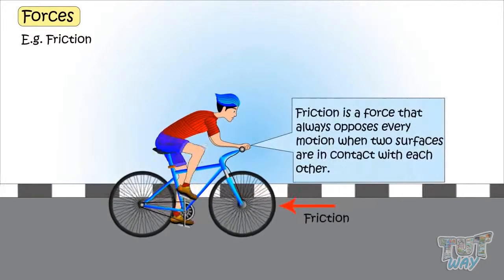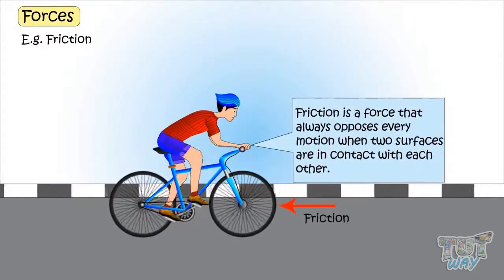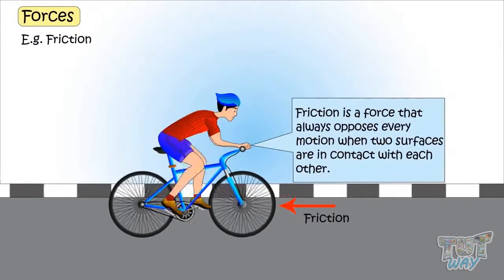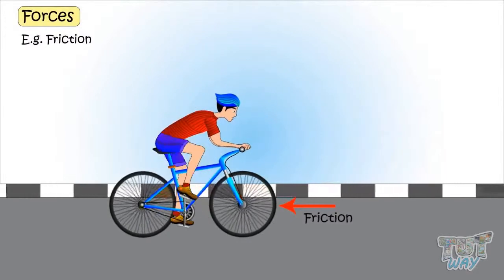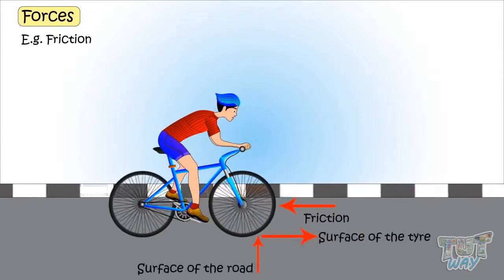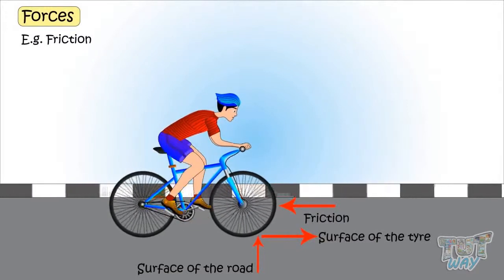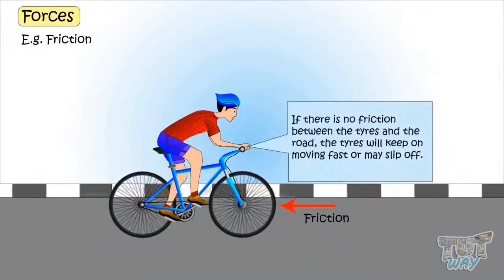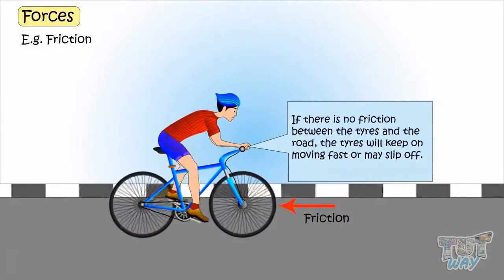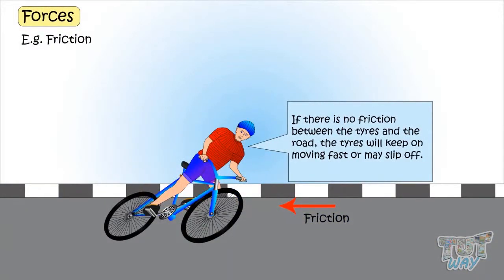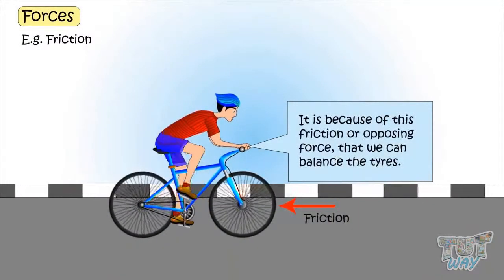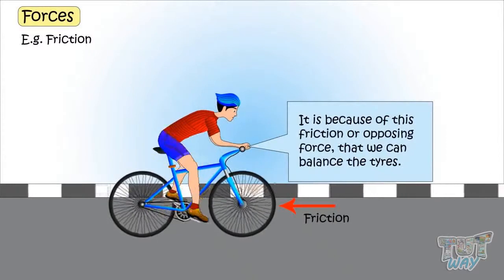Then there is friction. Friction is a force that always opposes any motion when two surfaces are in contact with each other. Here, the friction force is between the surface of the road and the surface of the tires. If there were no friction between the tires and the road, the tires would keep moving very fast and even slip off. It is because of this friction, or the opposing force, that we can balance the tires.